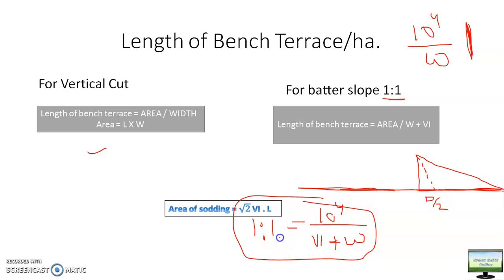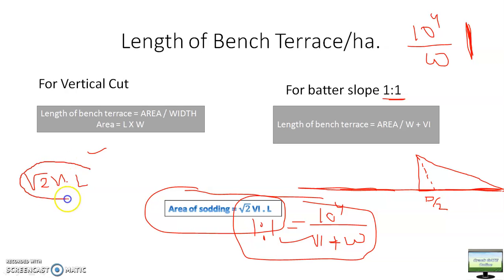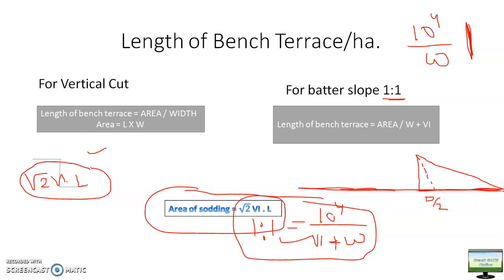Area of sodding is generally not asked, but you should have some idea for examination purposes. The formula is: vertical interval multiplied by the length per hectare, then multiplied by root 2.